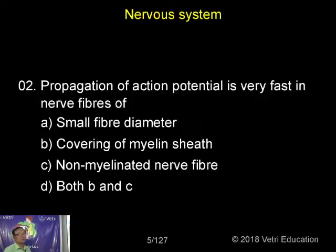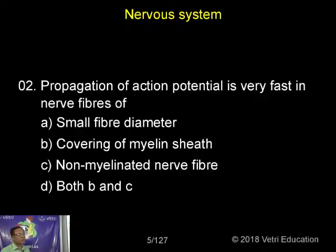Normally, the speed of conduction of impulses is faster in the case of myelin sheath because it is a myelinated nerve fiber.